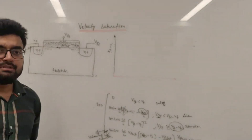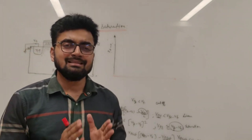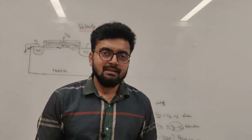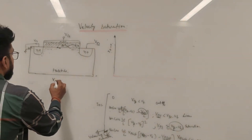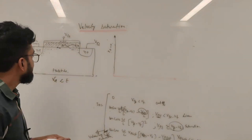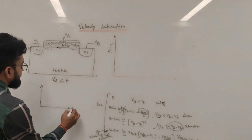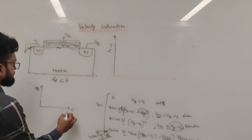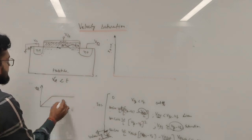Velocity saturation is the maximum velocity that an electron can attain at very high electric field. Normally, as we increase the electric field, the drift velocity of the electrons also increases. If you draw the drift velocity versus electric field curve, there is a linear relationship between drift velocity and electric field.